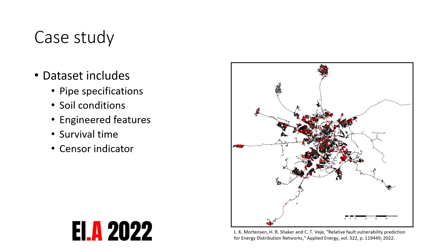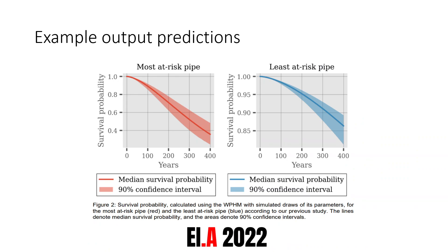We apply this Viable Proportional Hazards Model, adjusted for censoring, on a district heating system on Funen, which supplies more than 100,000 consumers and consists of approximately 140,000 pipes. The dataset includes pipe specifications, soil conditions, engineered features, and the survival time of observations along with their censoring type. Initial parameter estimates are achieved using a maximum likelihood estimation approach, and afterwards we sampled from the posterior density of the parameter distribution given the data using an algorithm called Metropolis-Hastings random walk, which allows us to characterize a confidence interval around the model's predictions.